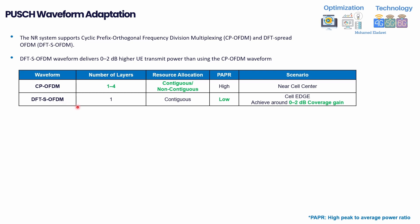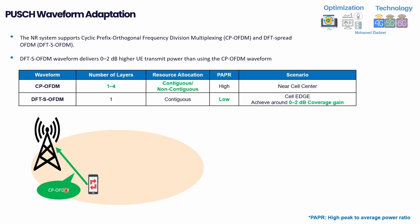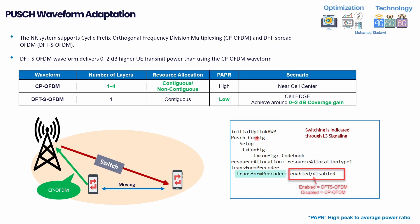The waveform adaptation is based on the PUSCH uplink SNR. Assuming a user is at the cell center, they would use CP-OFDM by default due to good signal quality. As the user moves to the cell edge and radio conditions degrade, the gNB will instruct the user to switch to DFT-s-OFDM. You can confirm this from the RRC configuration message under the initial uplink PUSCH part — there will be a switching indication called 'transform precoder.' If it's enabled, DFT-s-OFDM is active; if disabled, the user is still on CP-OFDM.